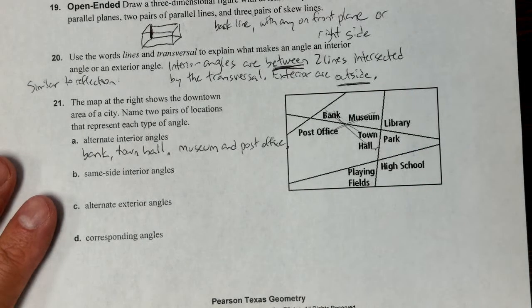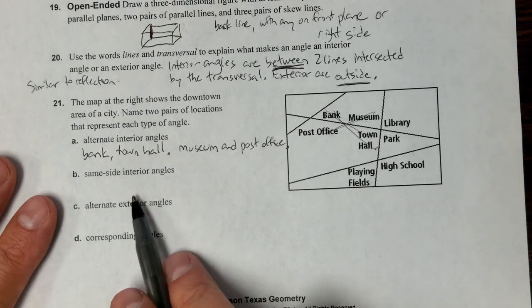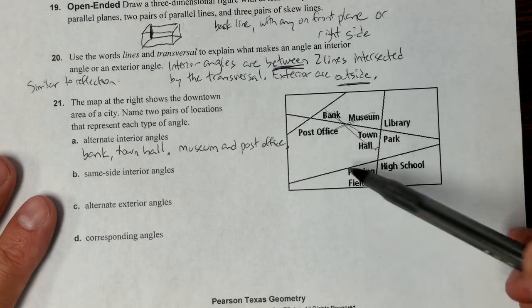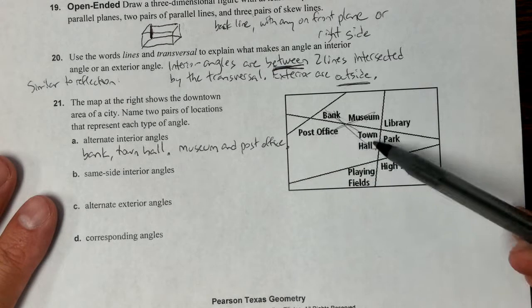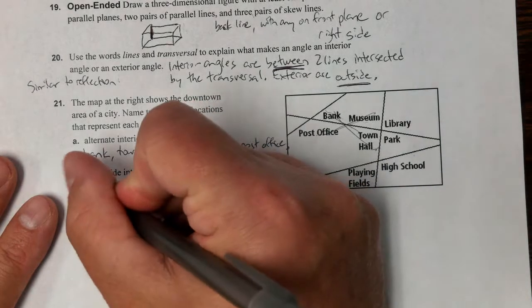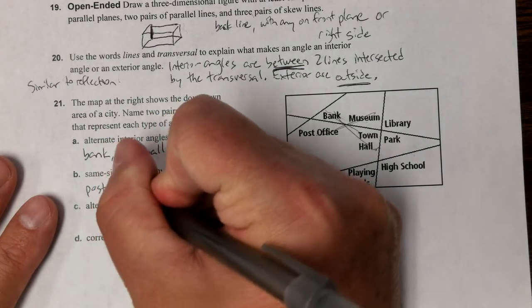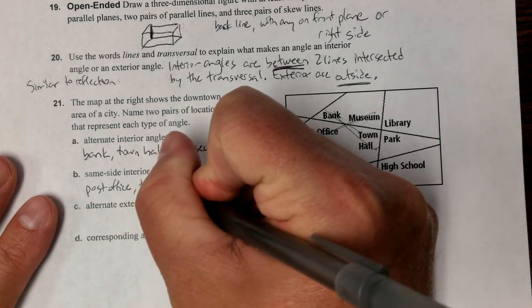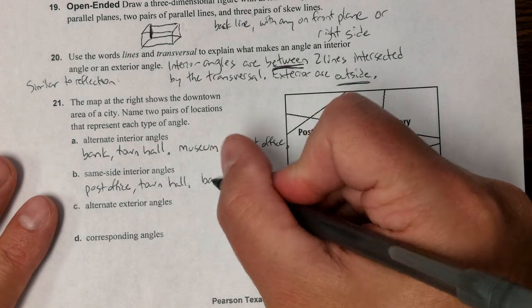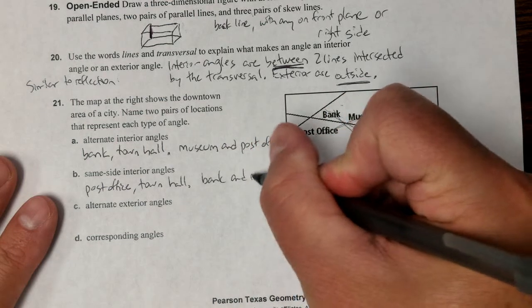That's alternate interior. Now on same side interior, that'd be like things on the same side of the street, like post office and town hall. Post office and town hall, and then bank and museum. Bank and museum.